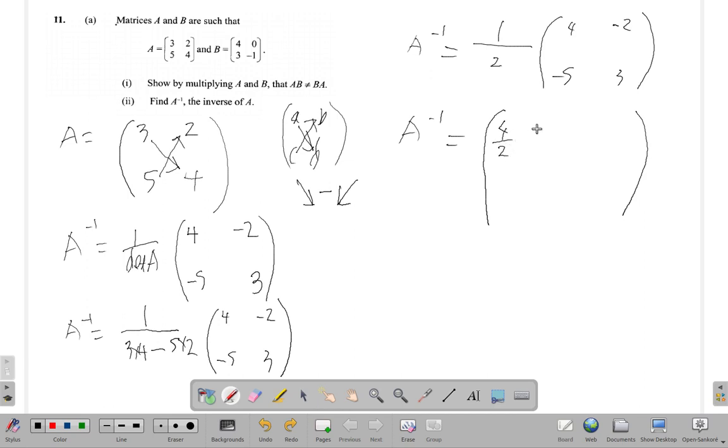Same thing as four over two. Half by negative two, same thing as negative two over two. Half by negative five, negative five halves. Half by three is going to be three halves, three over two.